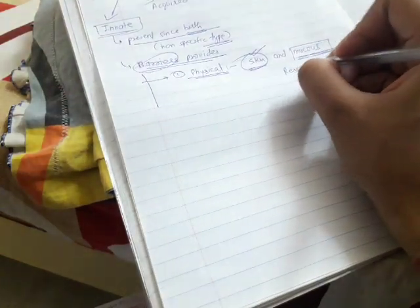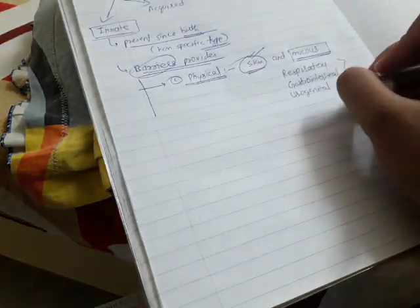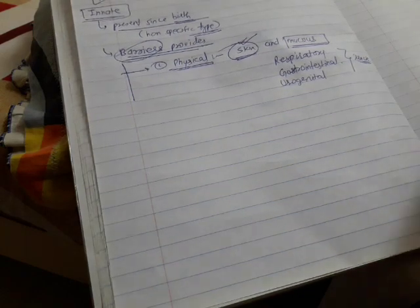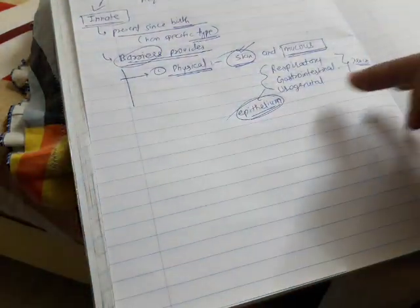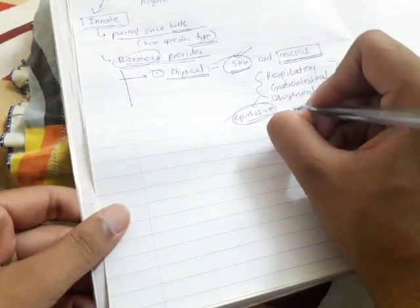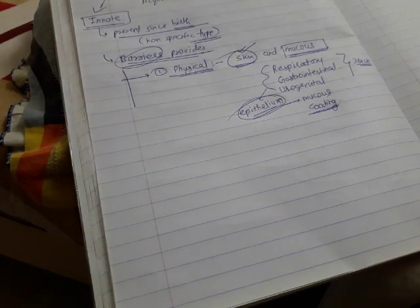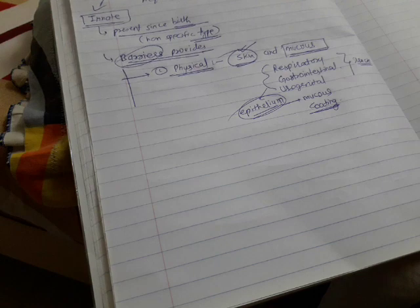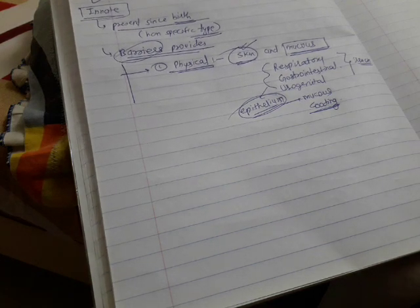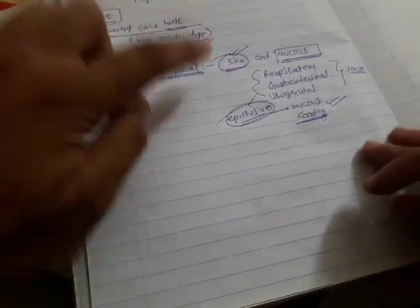Then there is mucus. You know we have our respiratory tract, gastrointestinal tract, and urogenital tract. These are all covered by epithelium, and there is a mucous coating on that epithelium. If a microorganism gets inside and wants to infect your organs, it needs to pass through this mucous coating. The mucous coating traps it and doesn't allow it to go further. So mucous coating is also a barrier.